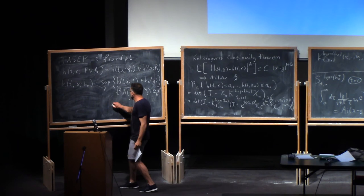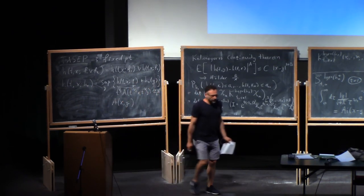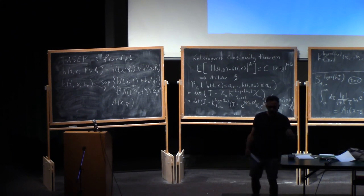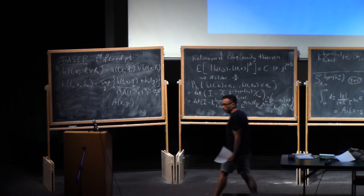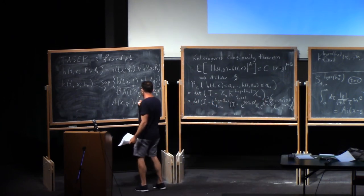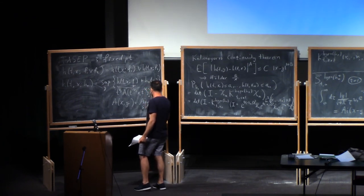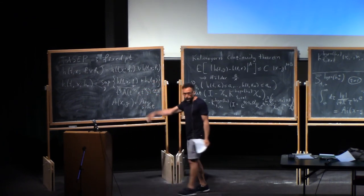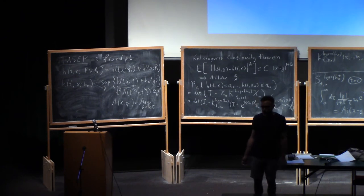So this A(X,Y) is a two-parameter process. In the first variable, it's a nice stochastic process. In the second, it's a little bit mysterious. It's not unique. We don't know it's unique. This is called the Airy sheet. And this variational formula tells you, in a sense, how to solve for any initial data as a variational problem using this sheet.